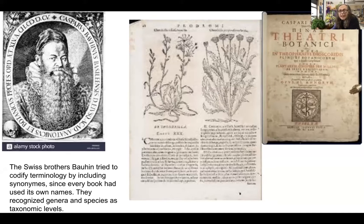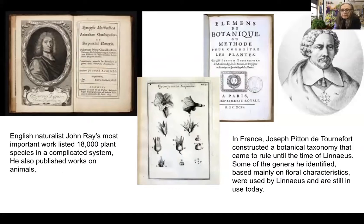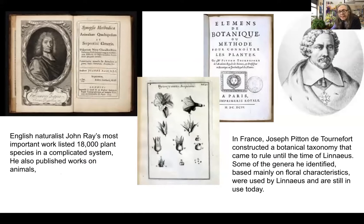Local names for different things — even today, that causes a lot of problems. We have a name in Texas for a certain flower, but they might have a different name in Minnesota. English John Ray had another botanical book, and he also published books on animals. In French, Joseph Pitton de Tournefort had a botanical taxonomy that came to rule until the time of Linnaeus. Some of the genera he identified were based on floral characteristics and are still in use today.